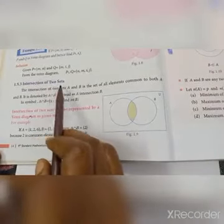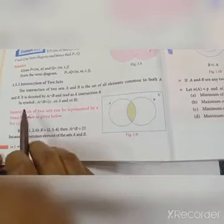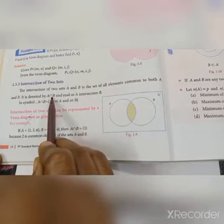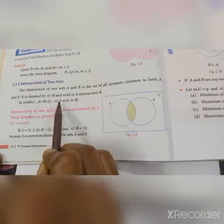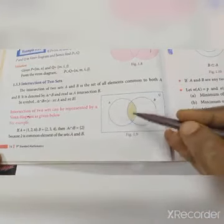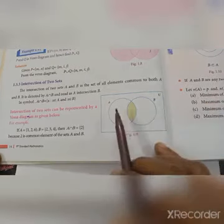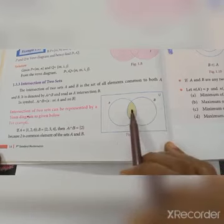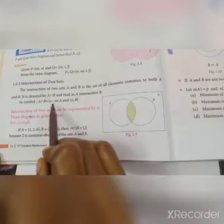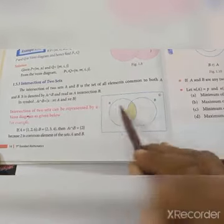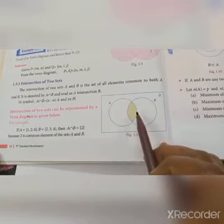Next, intersection of two sets. The intersection of two sets A and B is the set of all elements common to both A and B. It is denoted by A intersection B. In symbol, A intersection B = {x such that x belongs to A and x belongs to B}. The shaded center portion in the Venn diagram is A intersection B.